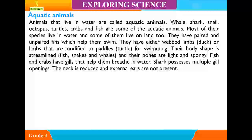Fish, snakes, and whales have bones that are light and spongy. Fish and crabs have gills that help them breathe in water. Sharks possess multiple gill openings. The neck is reduced and external ears are not present.